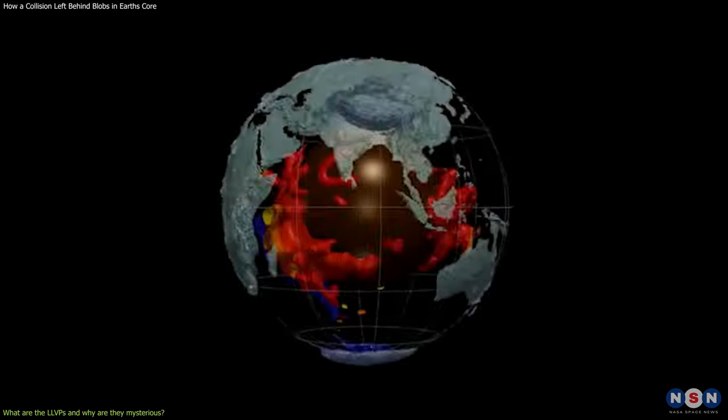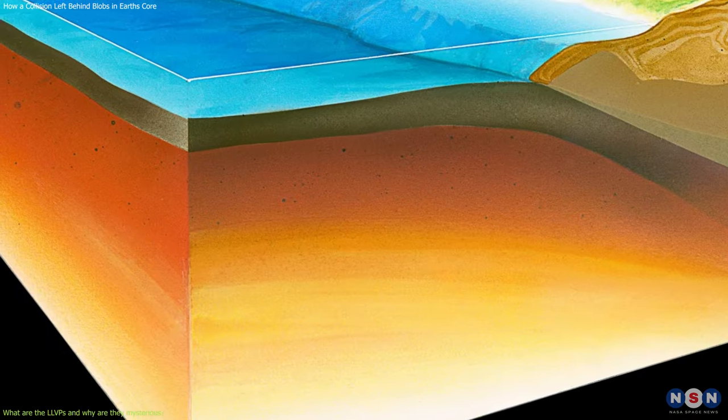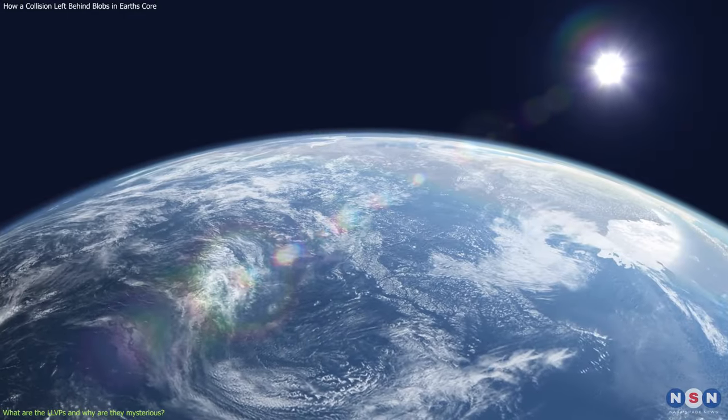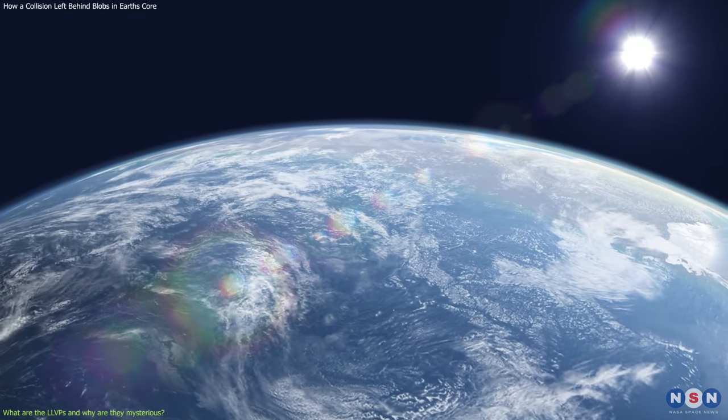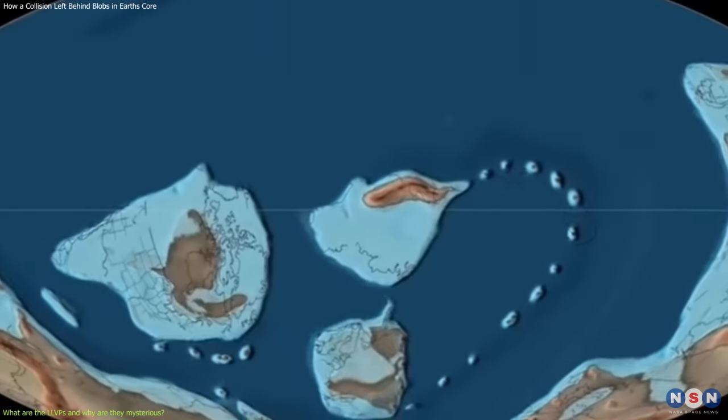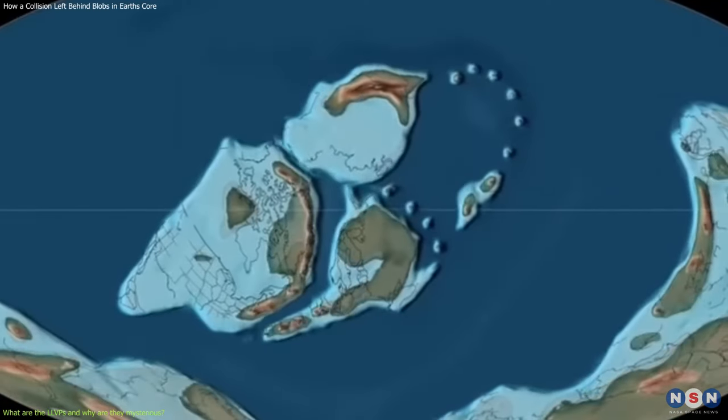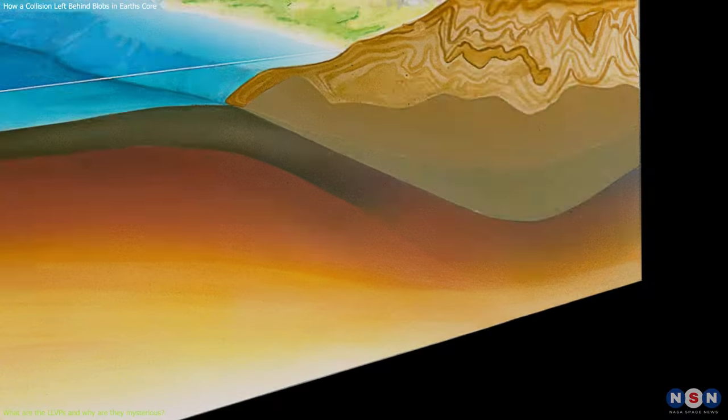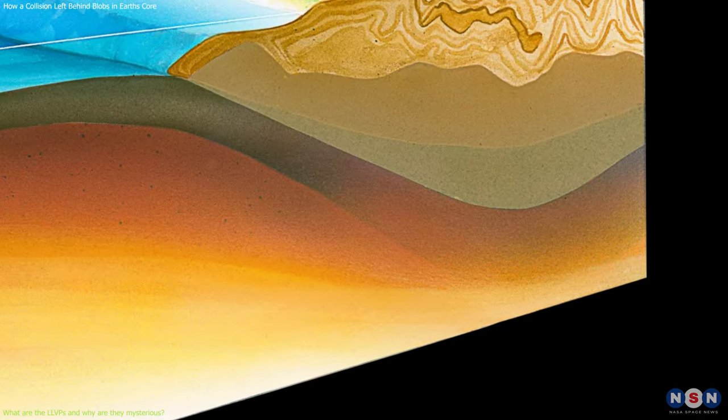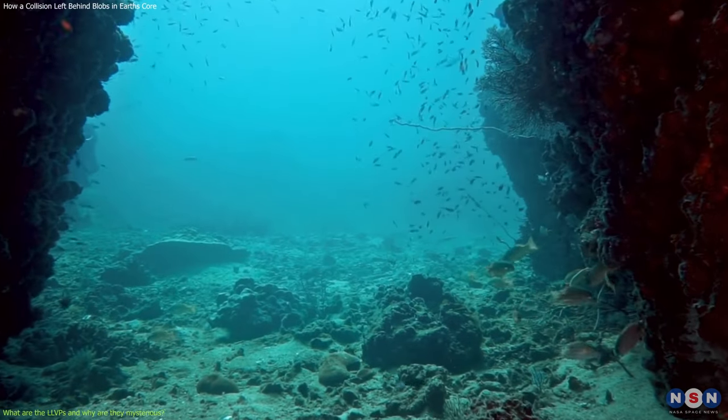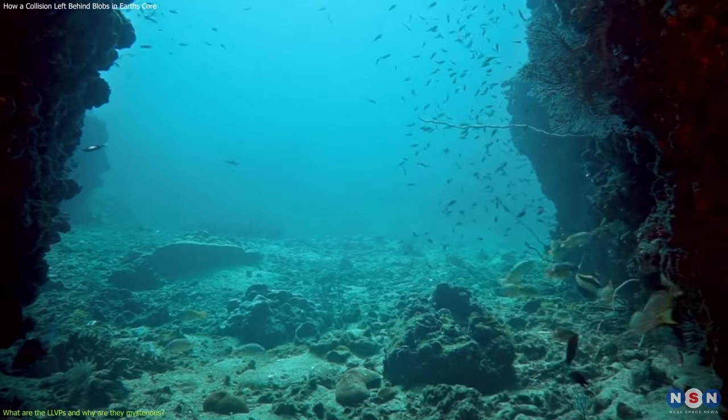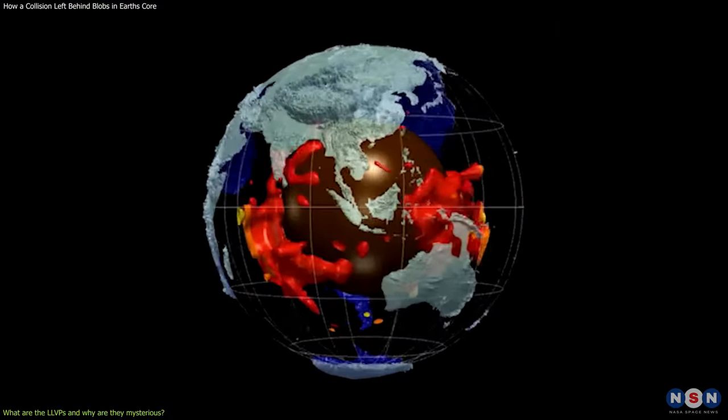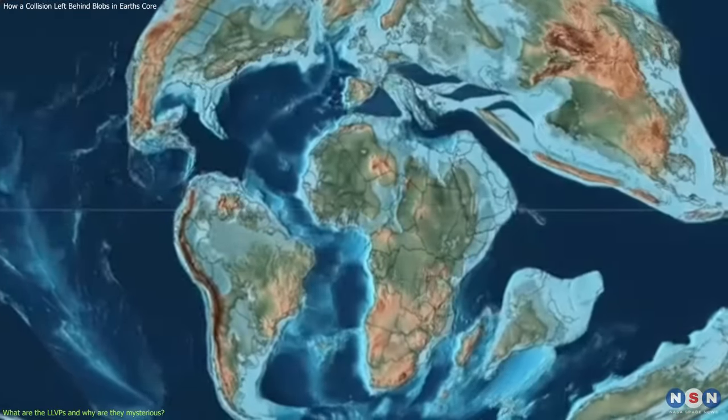Some of these theories are oceanic crust accumulation. This theory suggests that the LLVPs are made of old and dense oceanic crust that sank into the mantle over billions of years. The oceanic crust is the outer layer of the Earth that forms the ocean floor, and it is constantly recycled by the process of plate tectonics, where the crust moves and collides with other plates. When the oceanic crust subducts or slides under another plate, it can sink deeper into the mantle and accumulate at the bottom. However, this theory has some problems, such as the amount and composition of the oceanic crust needed to form the LLVPs, and the lack of evidence for such a large-scale subduction in the past.